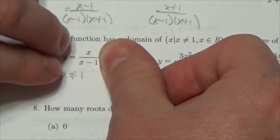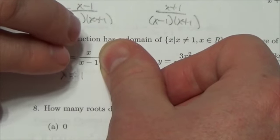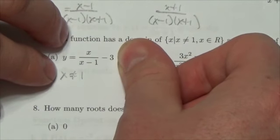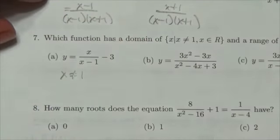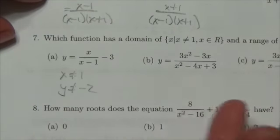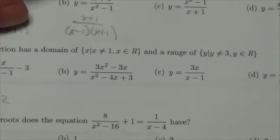Now, this is going to have a horizontal asymptote at y equals 1, which is the gap in the range here. Now, move that down 3, meaning that the range here is going to be y cannot equal negative 2. Well, that's not the thing that we're looking for, so we move on.